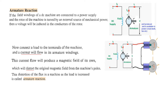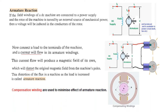The solution to armature reaction is that in the pole faces we put some additional windings called the compensating winding. When there is a compensating winding, it minimizes the effect of armature reaction.